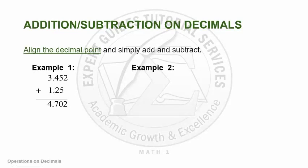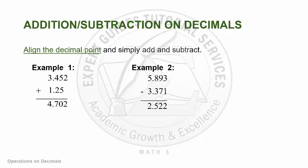In subtracting, let's take this example. Suppose you have 5.893 minus 3.371. Again, we align the decimal points in a vertical fashion and then perform the operation. Thus, we have 2.522. Note also that this applies even if you are subtracting a small number from a larger number — so if the numbers are reversed, say 3.371 minus 5.893, as long as you align the decimal points in a vertical fashion, you are good to go. This also applies even if you are subtracting many decimals at the same time.